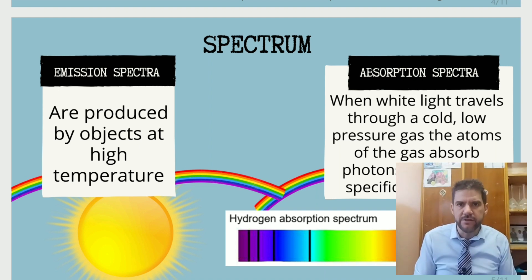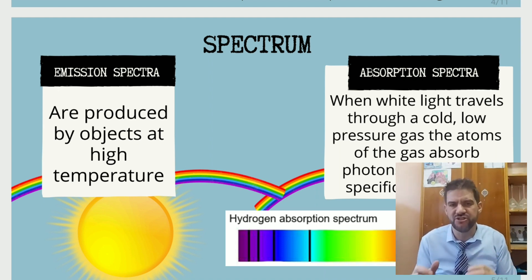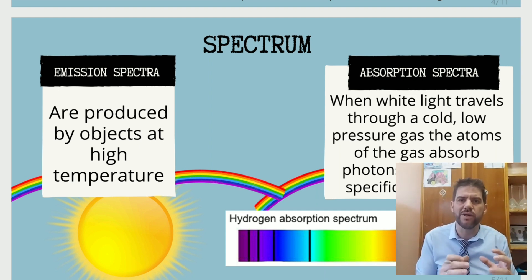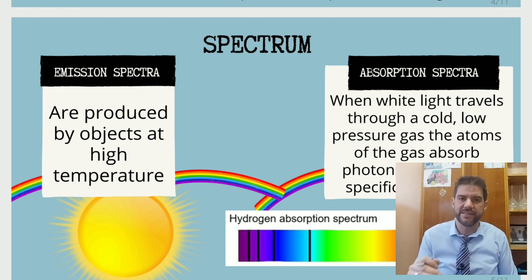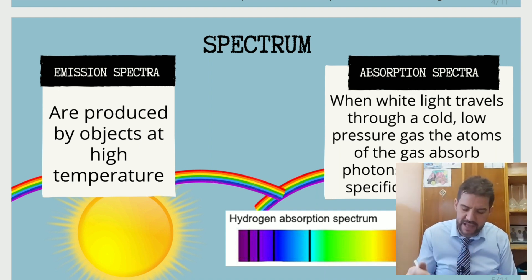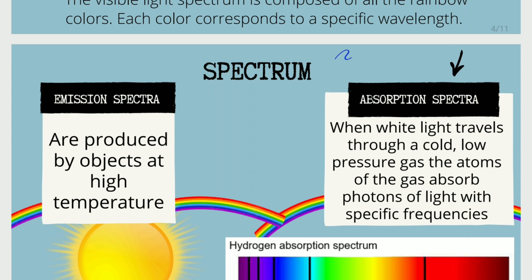We are going to have two main types of spectra. One is called emission spectra and the other is called absorption spectra. Emission spectra are produced by objects at high temperature, for instance the sun — a rainbow is an example of emission spectra. Absorption spectra are what we're going to be dealing with for blue and red shift, because light of certain frequencies is absorbed, which is why you see the dark lines.